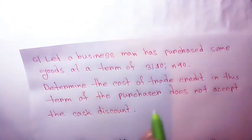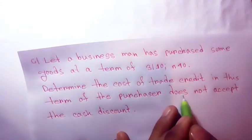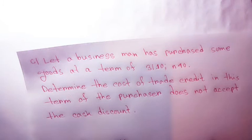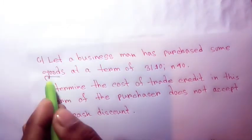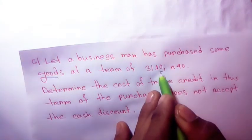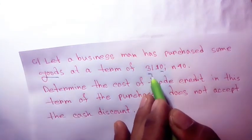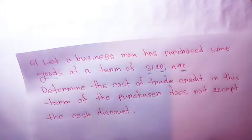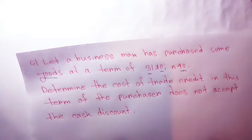In part A, the businessman does not accept the cash discount. We need to determine the cost of trade credit when the cash discount is not taken.